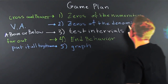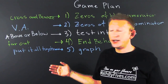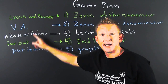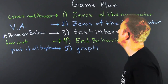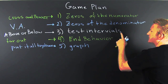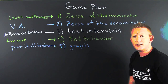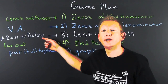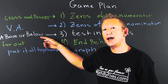Then you're gonna get the zeros of the denominator. Why? The zeros of the denominator are your vertical asymptotes. Then you're gonna test the intervals — that's when you put them on a number line and you see whether it's positive or negative in those regions. Why? Because that's gonna tell you whether or not your graph is above or below the x-axis.